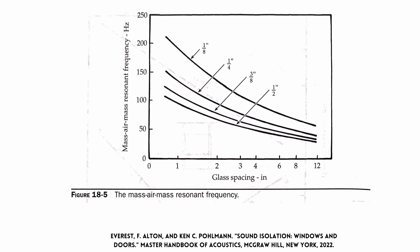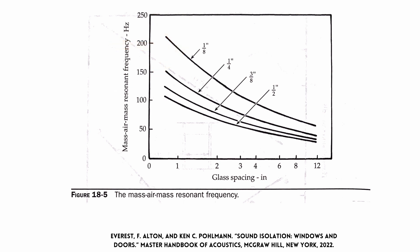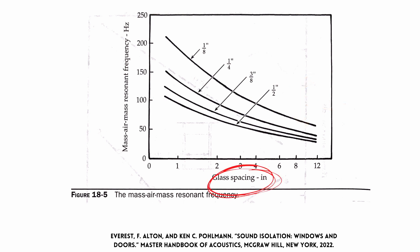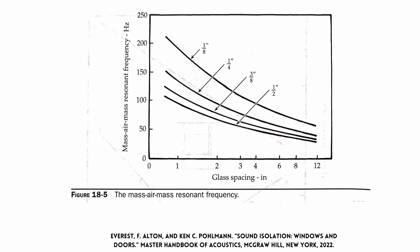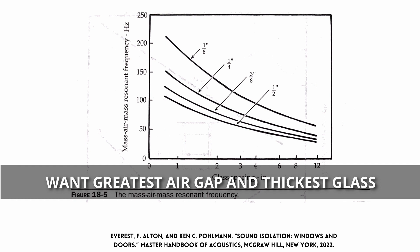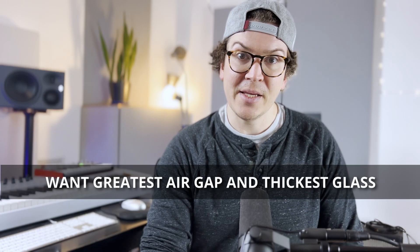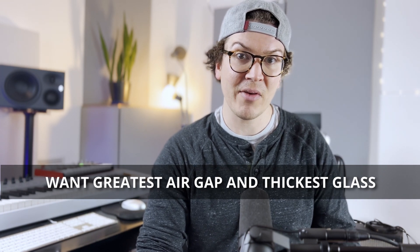Looking at an eighth inch pane of glass, we can see it's the worst — for every glass spacing, it's letting in higher frequencies of sound, which is bad for isolation. We want the lowest frequency possible. As we increase thickness from a quarter inch to three-eighths to a half inch, the frequency at which sound comes in is greatly reduced. As glass spacing increases from one to four to twelve inches, that also raises the frequency of the acoustic hole. So the big takeaway is simply: you want as big an airspace as possible and as thick a glass as possible.